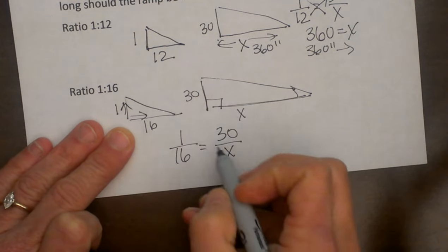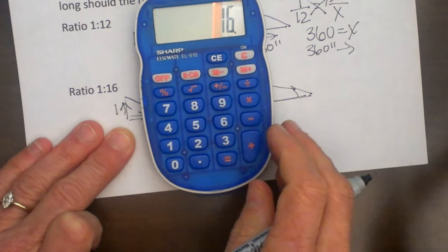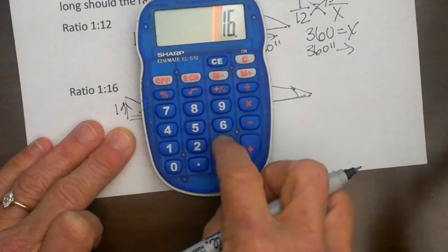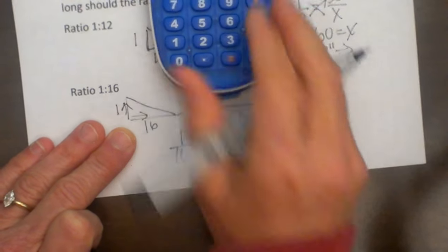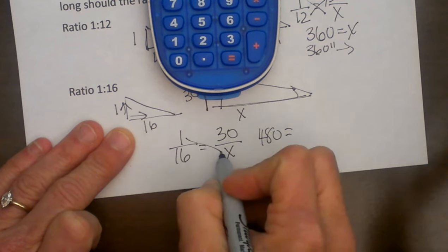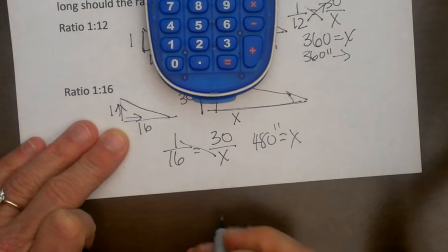Again we do a cross product. So I am going to take 16 on my calculator and I am going to multiply it by 30 to do my cross product. 16 times 30 and I get 480, so that is 480 and x times 1 is just x. So that means it is 480 inches long.